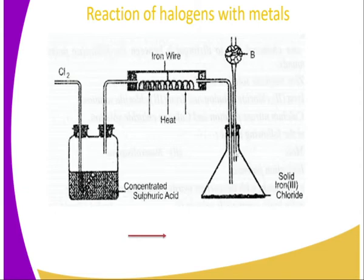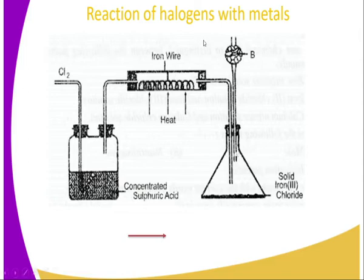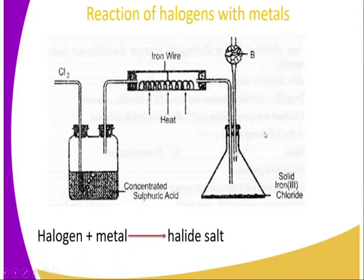How do halogens react with metals? From the setup shown here, chlorine gas is generated and bubbled through sulfuric acid to dry it. It is then passed through a combustion tube containing iron wire. The product formed is iron chloride. Since iron chloride is a sublimate, calcium oxide is used as a drying agent on the other side to ensure moisture does not reach the iron(III) chloride.